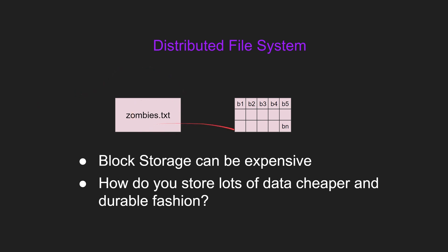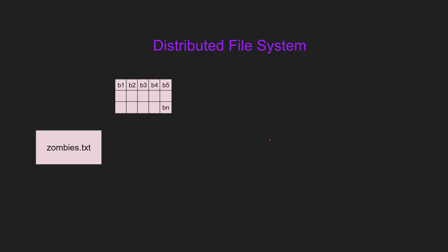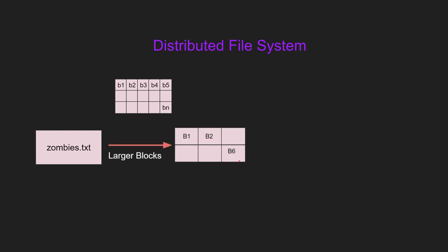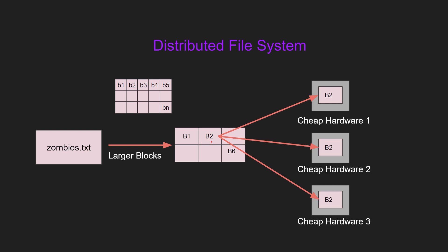Let's say our favorite book is stored in multiple blocks, and block B3 gets corrupted or goes bad in your hard disk. Basically, this whole book is corrupted and you cannot grab that block anymore. So how do you store lots of data cheaper and in a durable fashion? Distributed file system solves that problem. Instead of saving into 256 kilobyte chunks, it saves into larger blocks — let's say B1, B2 to B6 — and for each of these blocks, it replicates and saves them into multiple places. So block B2 will be saved in commodity hardware 1, 2, and 3, and even if one hardware fails, it can still retrieve the block from the others.